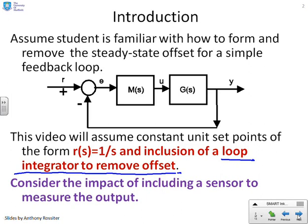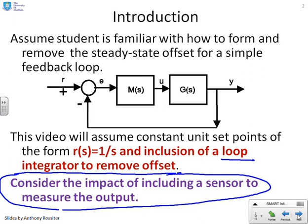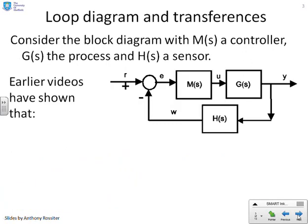What we're going to do is ask ourselves what happens when you add a sensor on the output. In practice, there's always going to be a sensor to measure the output. Let's look at this diagram. You'll notice we've got the standard compensator G in the forward path, but we've added into the return path H of S, which represents the sensor dynamics — something which measures the output, like a thermocouple or a voltmeter.